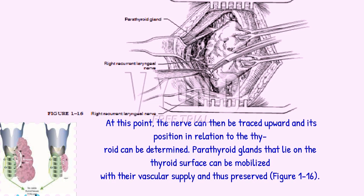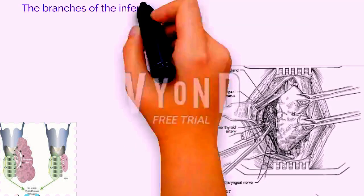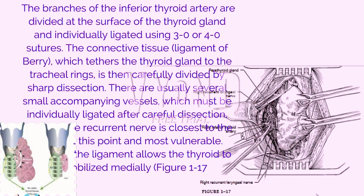Parathyroid glands that lie on the thyroid surface can be mobilized with their vascular supply and thus preserved, figure 1-16. The branches of the inferior thyroid artery are divided at the surface of the thyroid gland and individually ligated using 3-0 or 4-0 sutures. The connective tissue ligament of Berry, which tethers the thyroid gland to the tracheal rings, is then carefully divided by sharp dissection. There are usually several small accompanying vessels which must be individually ligated after careful dissection, because the recurrent nerve is closest to the thyroid at this point and most vulnerable. Division of the ligament allows the thyroid to be mobilized medially, figure 1-17.